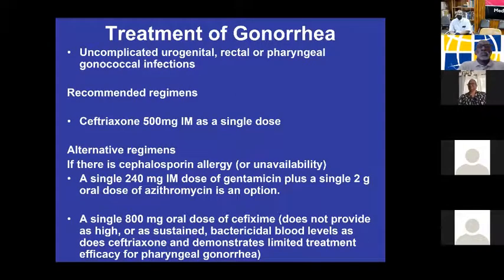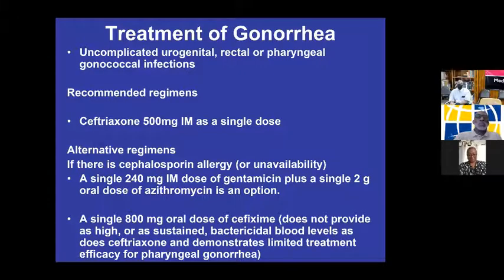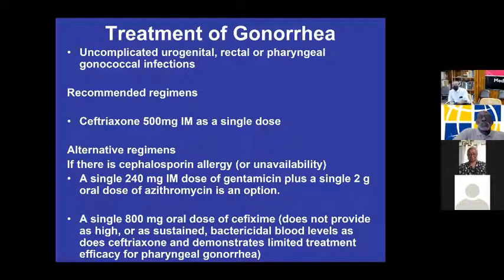How we treat these conditions. For gonorrhea: ceftriaxone 500 milligrams as a single dose is the drug of choice. Alternatively, you can give a single dose of gentamicin 240 milligrams plus a single dose of 2 grams of oral azithromycin. Or 800 milligrams of cefixime, although this doesn't provide high or sustained bactericidal levels as ceftriaxone. Since we're running short on ceftriaxone, gentamicin plus azithromycin is an alternative.